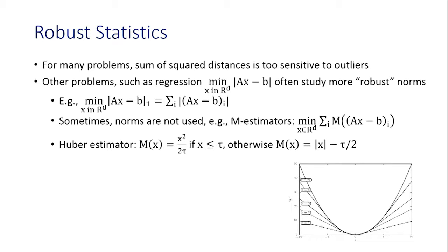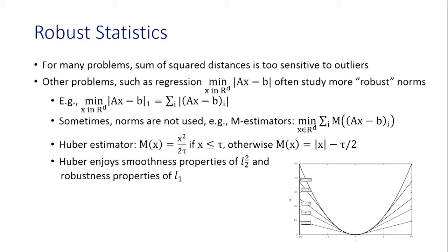One well-studied M-estimator is the Huber estimator. It looks quadratic near the origin, and as you move away from the origin, at some threshold τ, it becomes linear. Why would you want this? In optimization problems you often want smoothness. One nice property is that it's differentiable at the origin, so it has smoothness properties of L2-squared but also robustness properties of L1. As you become more and more outlying, you have this linear robustness property.